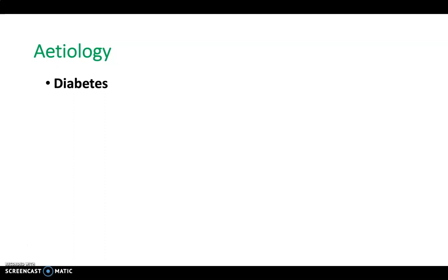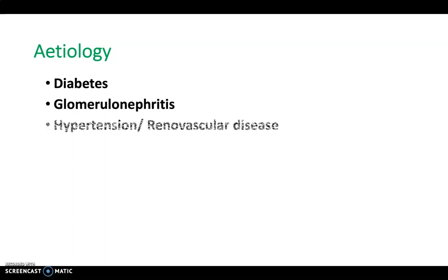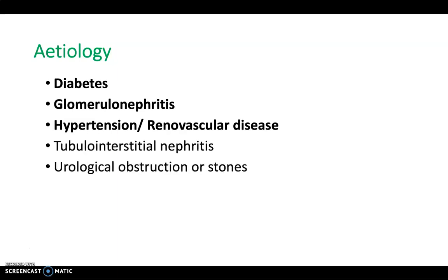So what are some of the causes of CKD? Important ones to think about are diabetes, glomerulonephritis, and hypertension or renal vascular disease. Others include tubular interstitial nephritis, urological obstructions or renal stones, and autoimmune conditions like systemic lupus erythematosus or vasculitis.